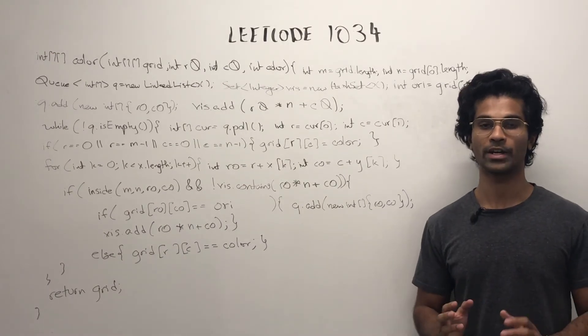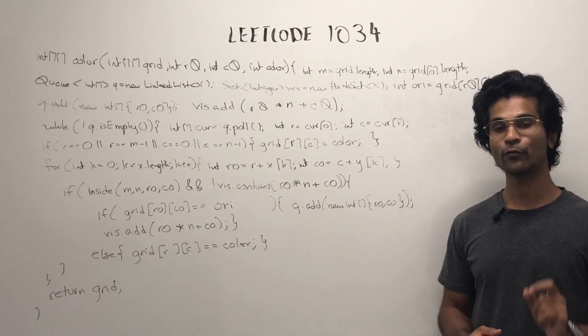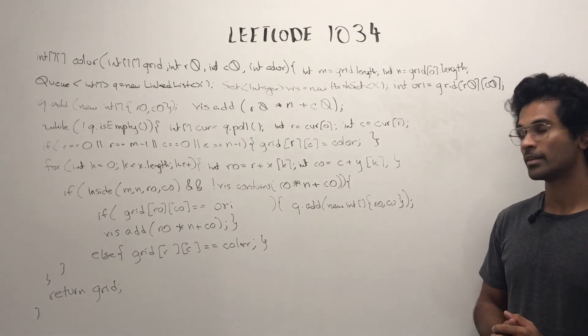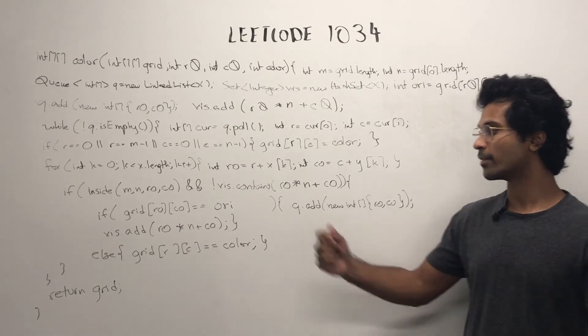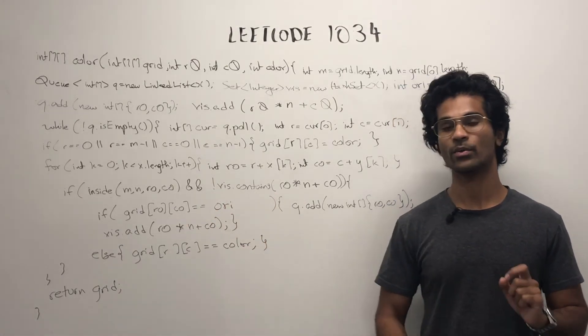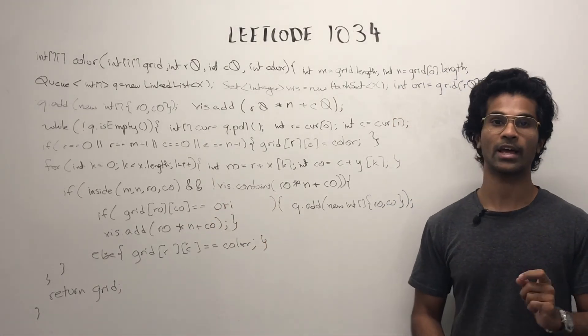Then we go up, down, and left, right to check the neighbors. If we haven't visited the neighbor and it's within the bounds, we check the color. If the color is the original, then we add it to the queue and add it as visited.